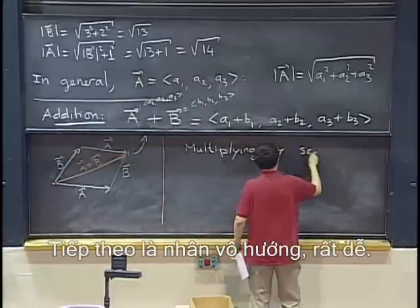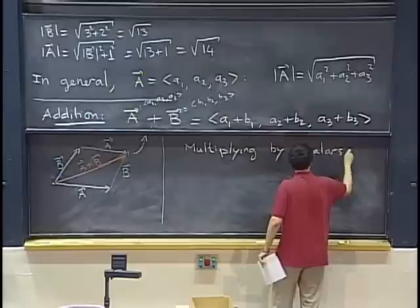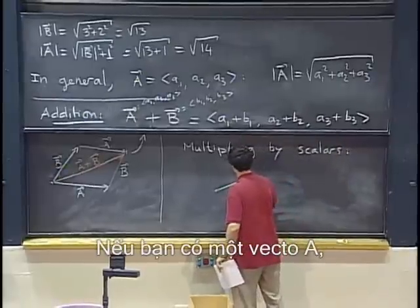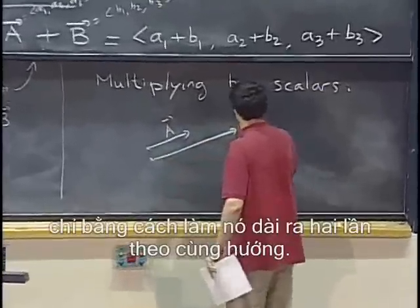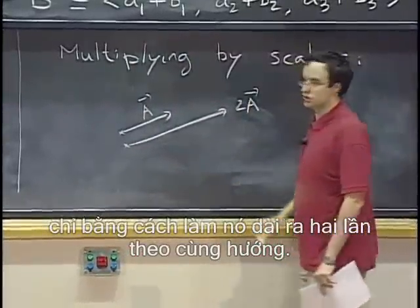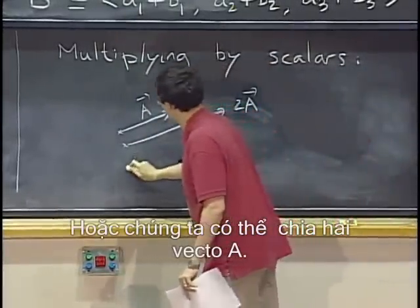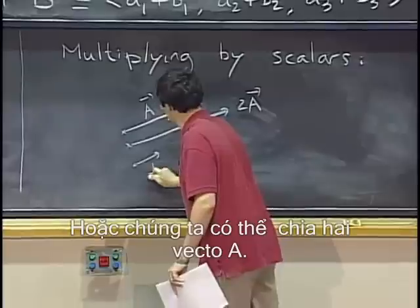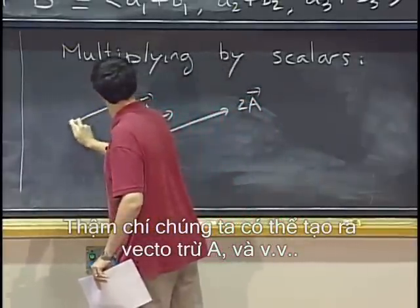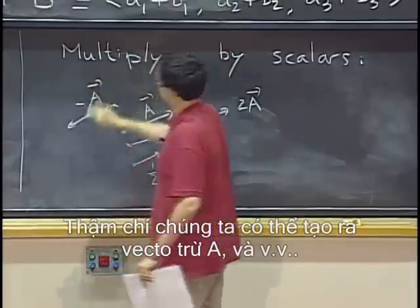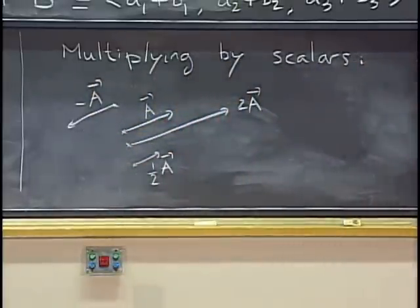So, multiplication by a scalar, it's very easy. If you have a vector a, then you can form a vector 2a just by making it go twice as far in the same direction. OK, or we can make half a more modestly. Or we can even make a minus a, and so on.